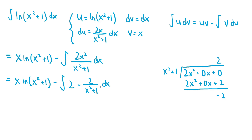In general, when we have a rational function and the degree of the numerator is not less than the degree of the denominator, we can do polynomial long division with the numerator as the dividend and the denominator as the divisor. Then we can rewrite the rational function as the sum of the quotient and the remainder divided by the divisor, which is always the denominator of the rational function.